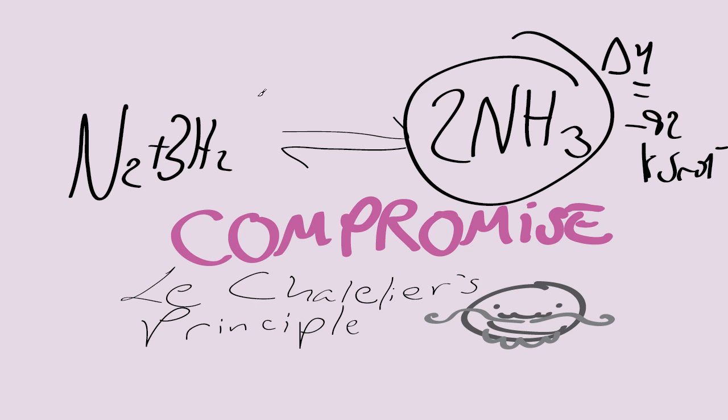So the compromises and reasons for the compromises are: the pressure favoured is 200 atmospheres, because much higher pressures need a lot more energy and expensive machinery, also safety problems. 200 atmospheres is relatively, it's a fair pressure but it's not that much.